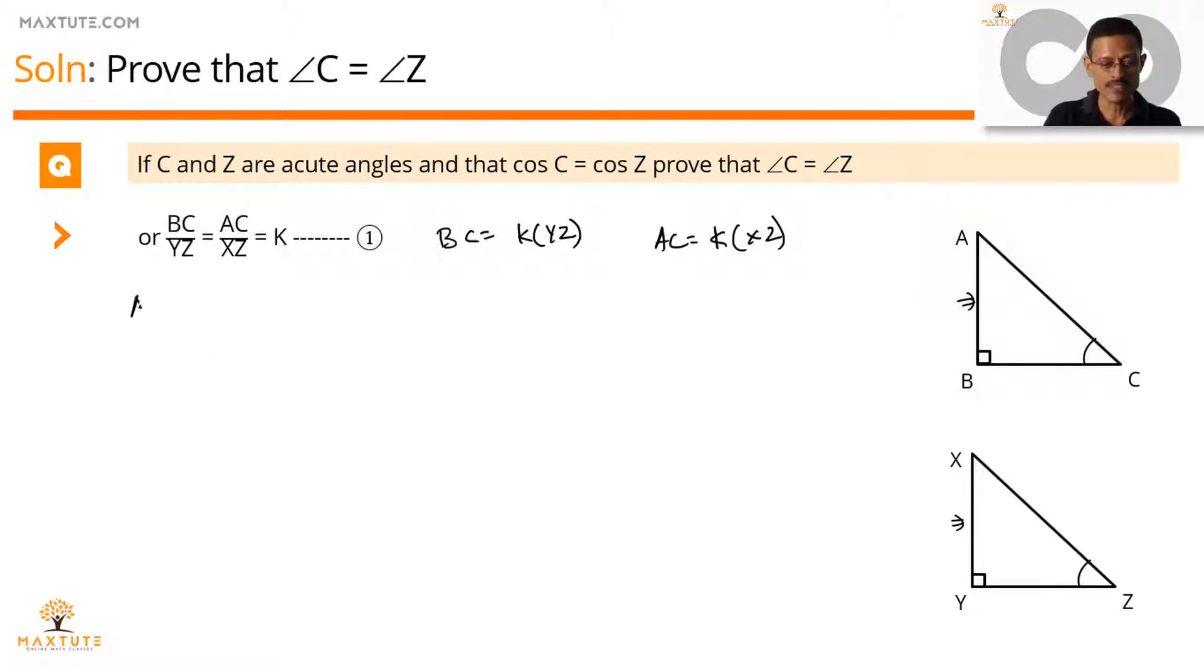What is AB? By Pythagoras theorem, AB is equal to square root of AC square, which is the hypotenuse square, minus BC square. So this AC can be replaced as K into XZ. This minus BC can be replaced with K into YZ. Let's square these two. K square and K square can be taken common from both these terms. When they come out of the square root, the K squares will come out as a K. So it's going to be K into square root of XZ square minus YZ square. This is the value of AB.